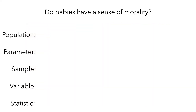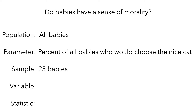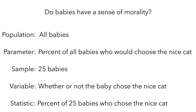In this scenario, the population would be all babies, and the parameter would be the percent of all babies who would choose the nice cat. Since the researchers couldn't do this experiment with all babies, they used a sample of 25 babies. What they measured about each baby was whether or not the baby chose the nice cat, and then they computed the percent of the 25 babies who chose the nice cat.